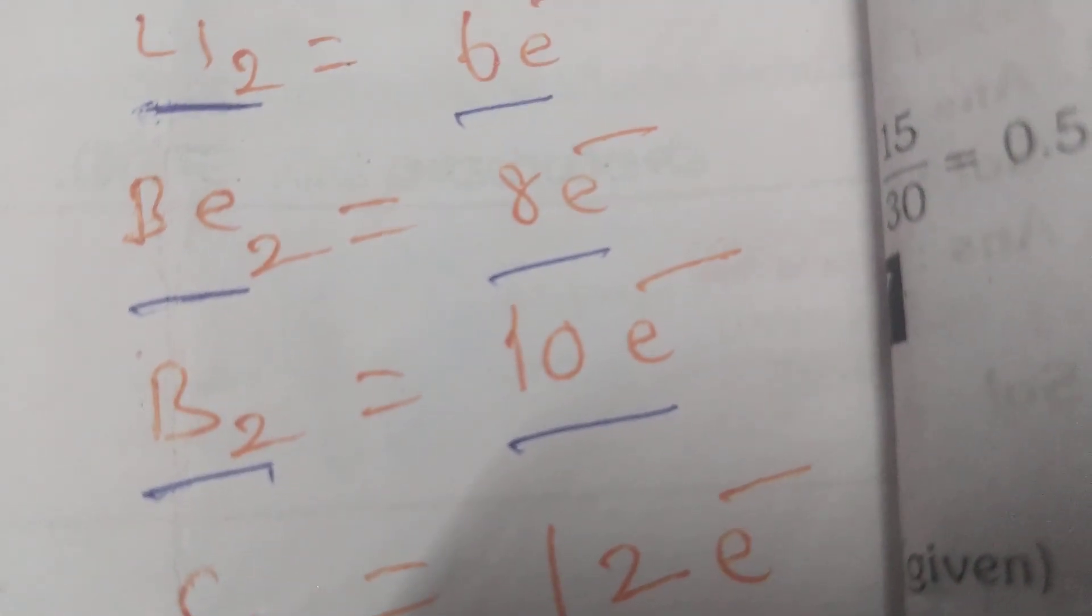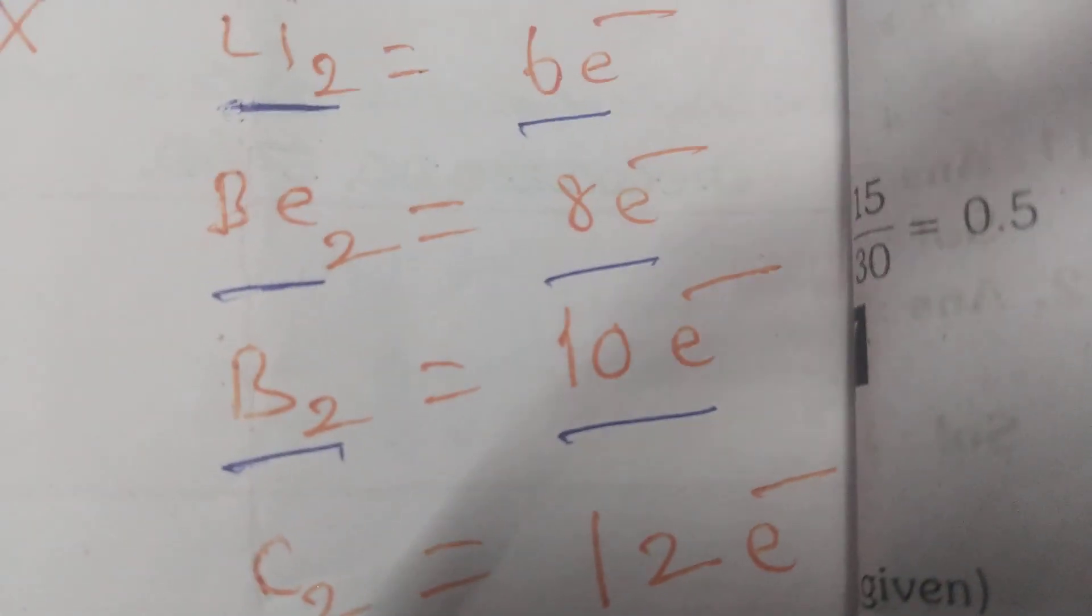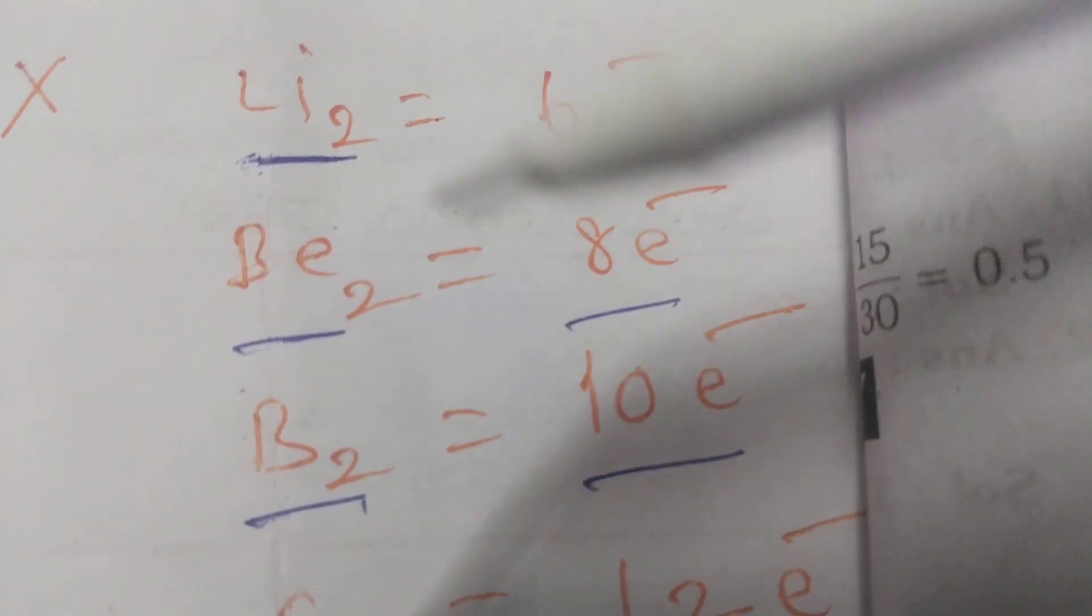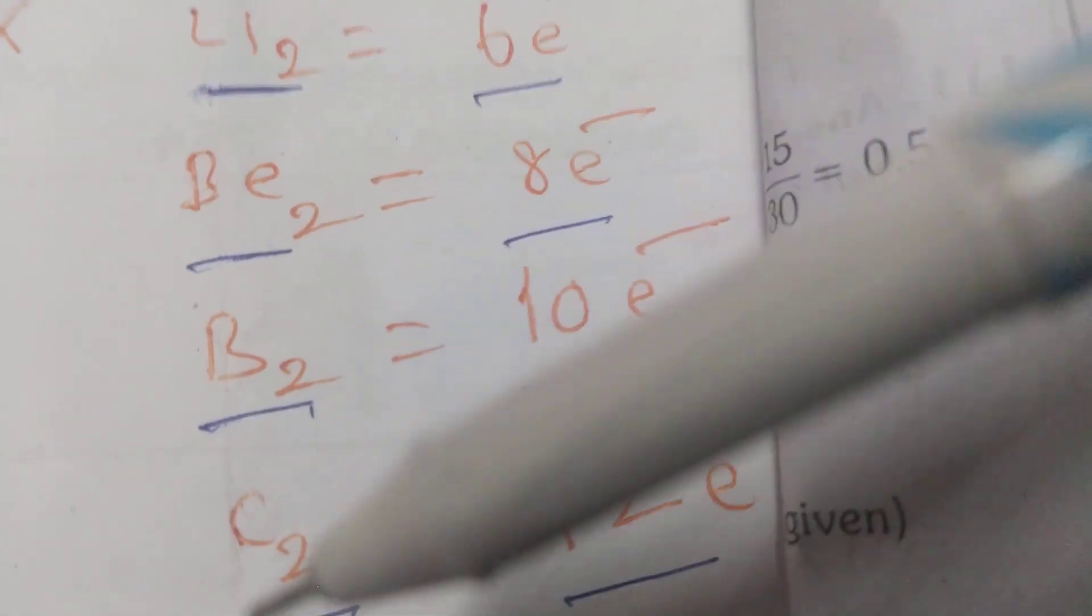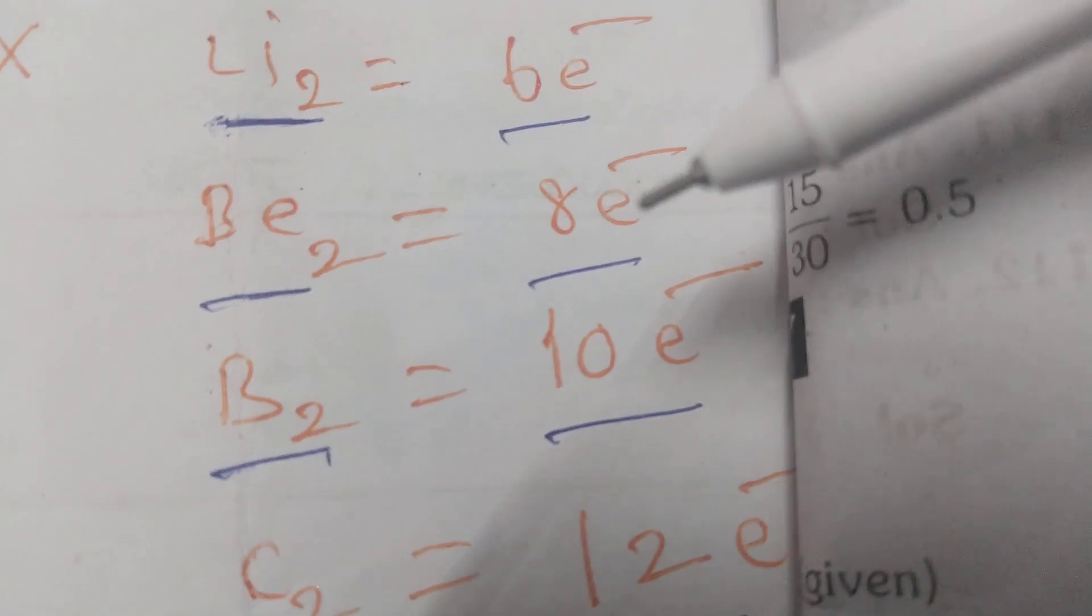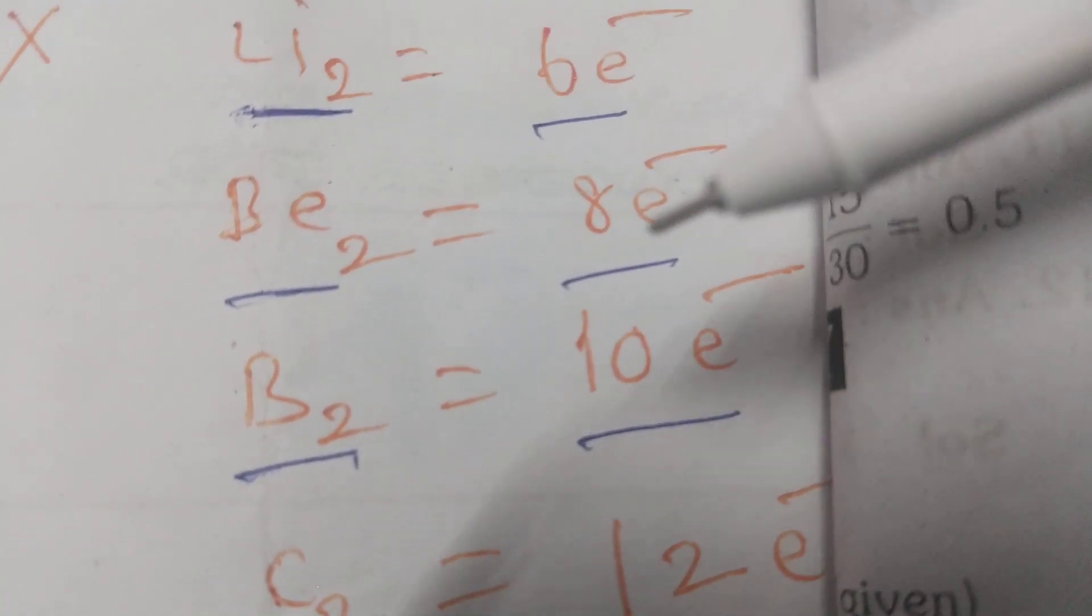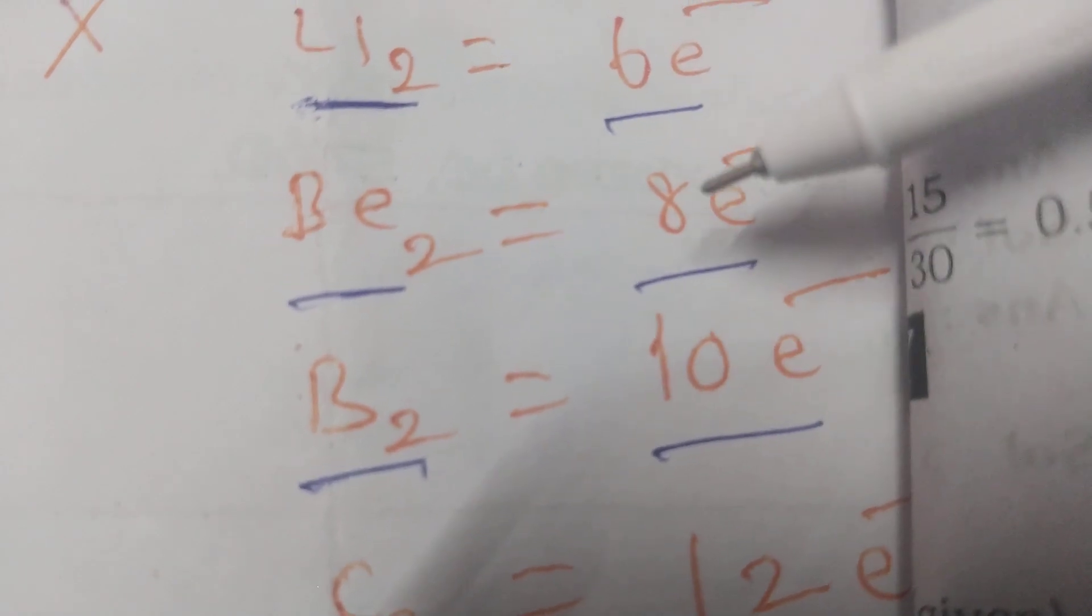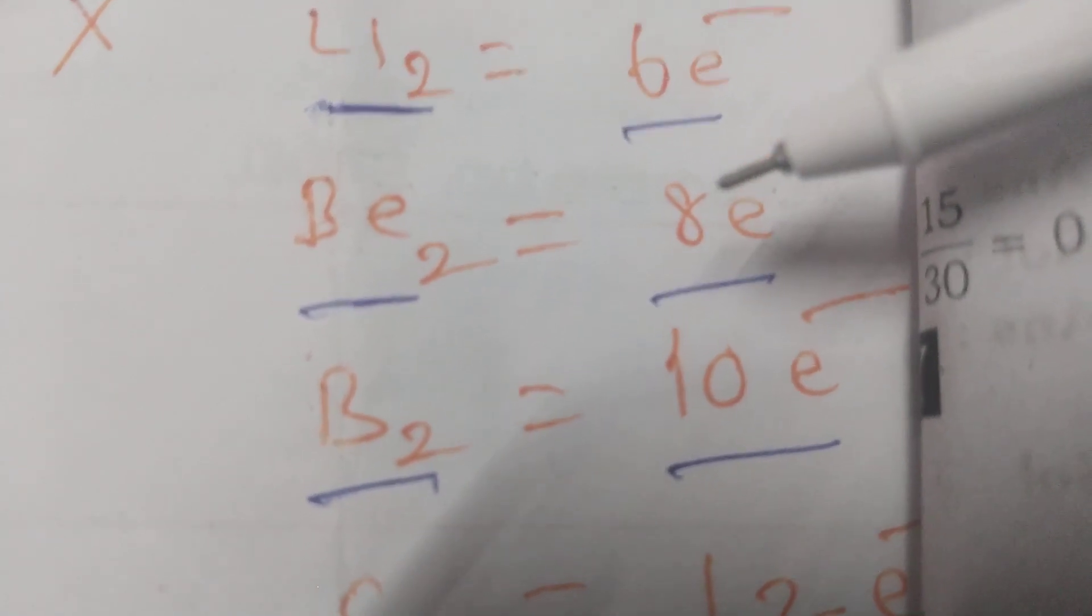Apply Pauli principle, definitely you will be able to know. You can predict the bond order for Li-2, Be-2, B2, C2 among 4 options. Be-2 possesses 8 electrons, the bond order is 0. Number of bonding electrons here 4, anti-bonding electrons also 4.